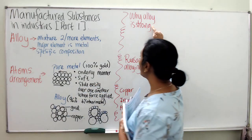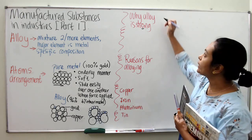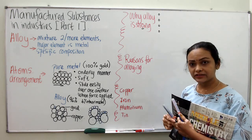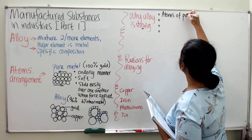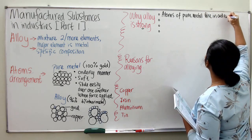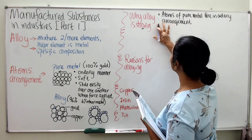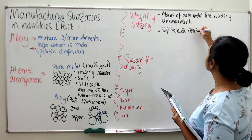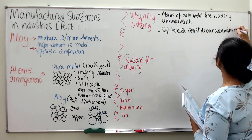That is the reason why we say alloy is stronger. Now we are going to the explanation of why alloy is stronger. Whatever teacher writes here is the key point which can easily gain you marks, especially when you are writing essay questions. Atoms of pure metal are in orderly arrangement.